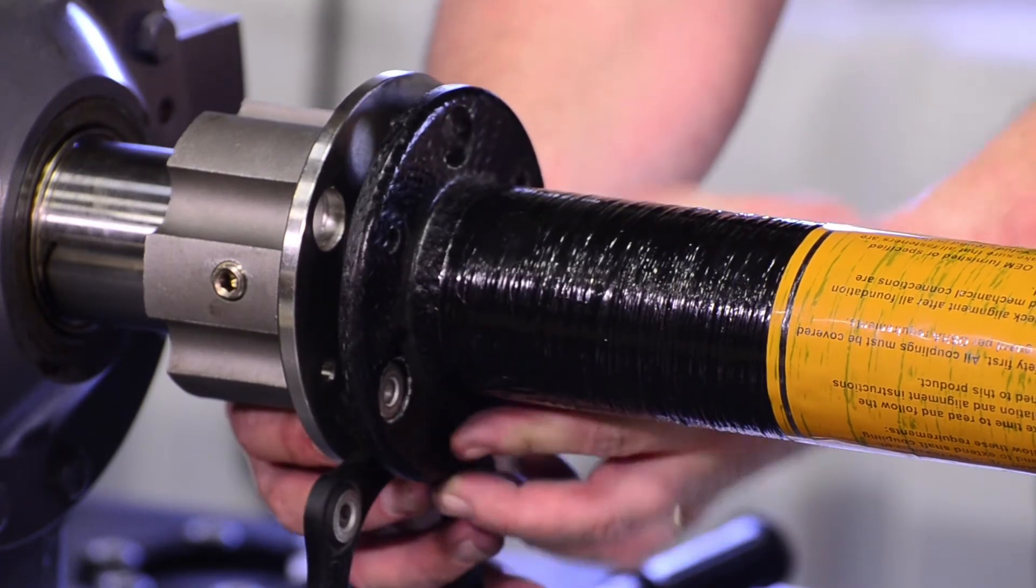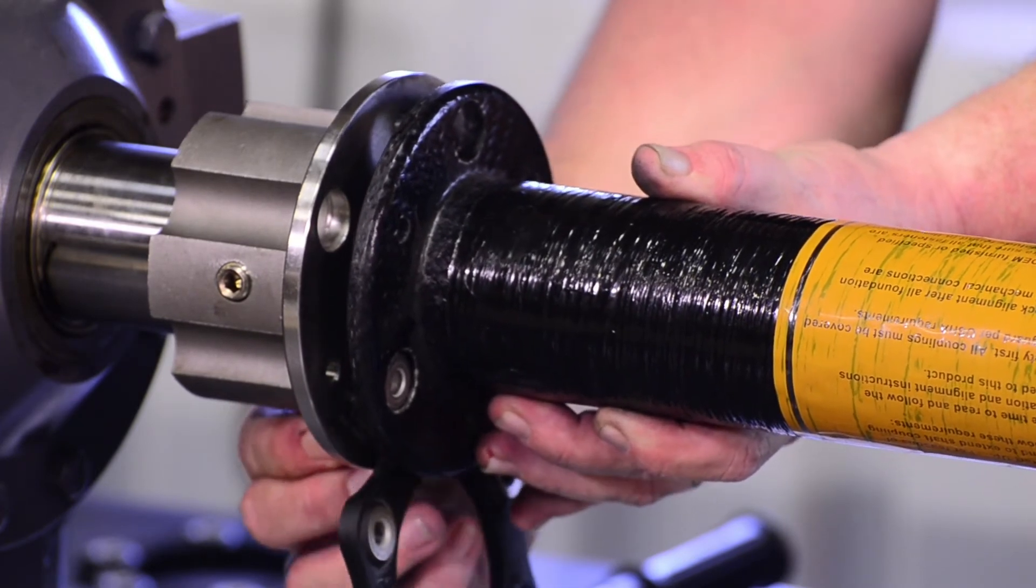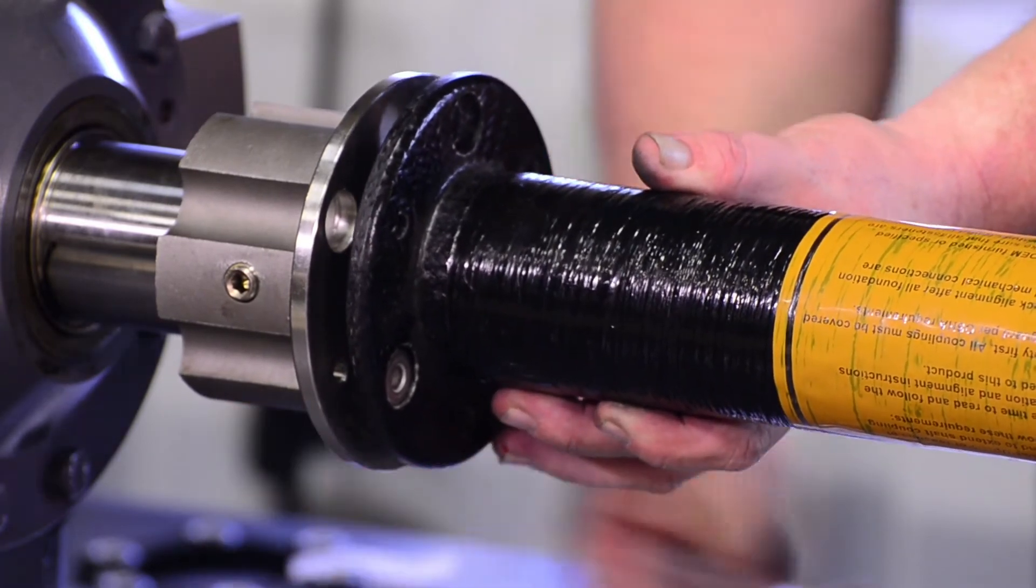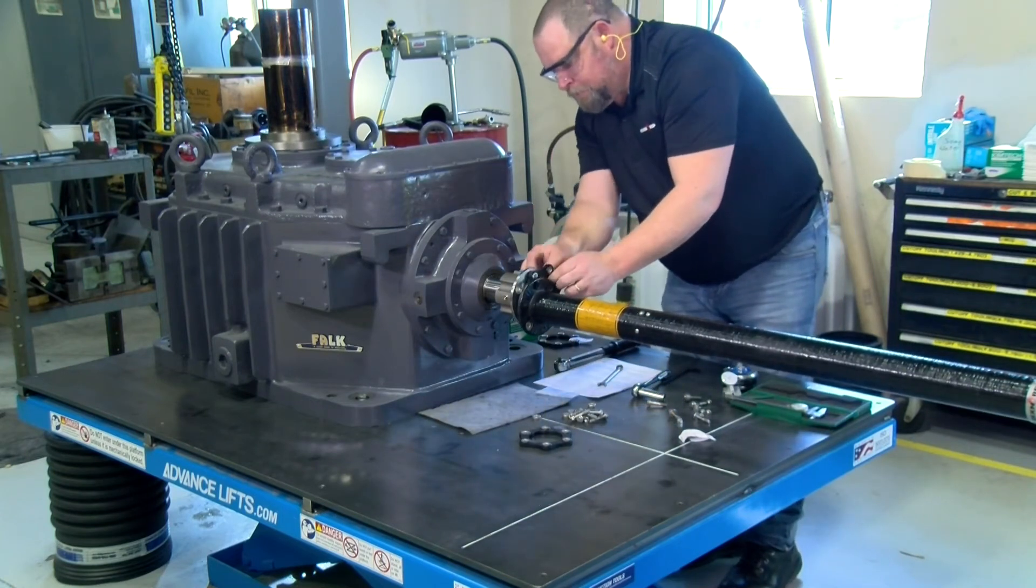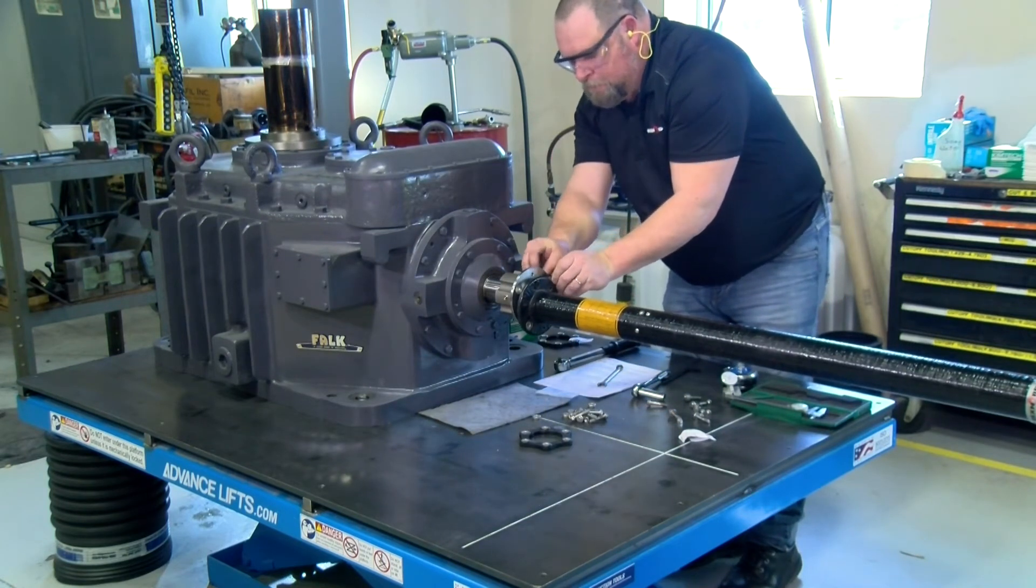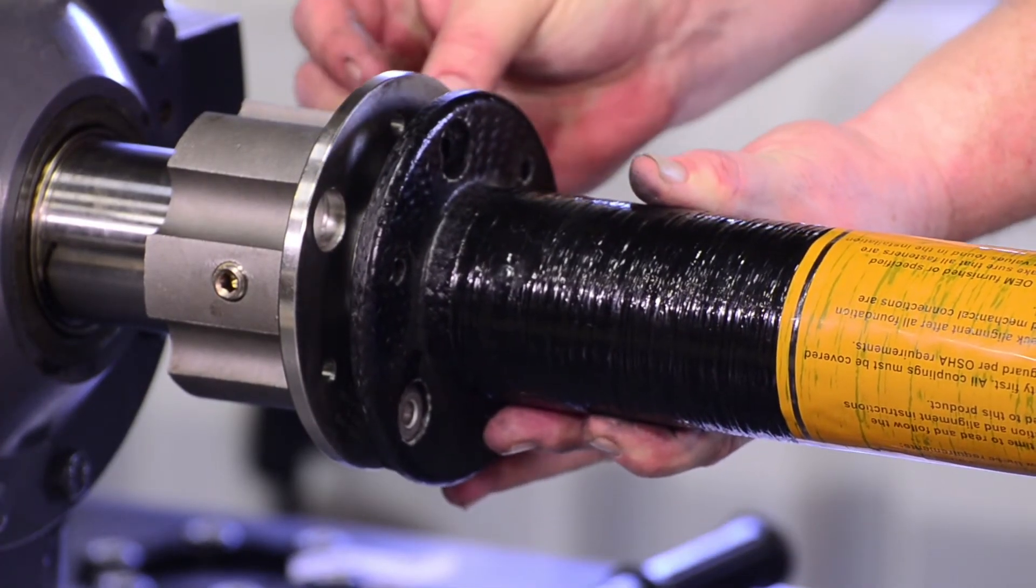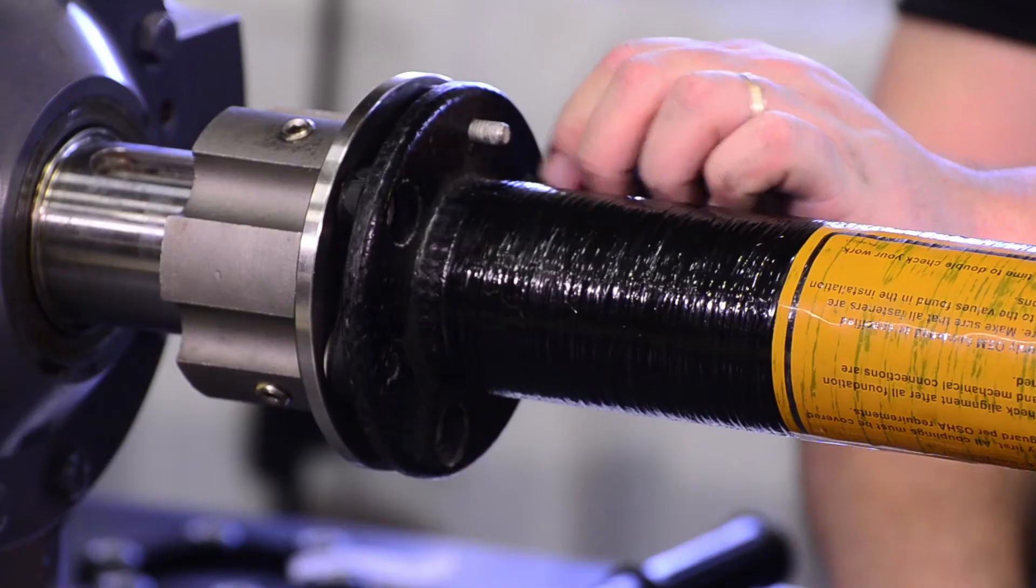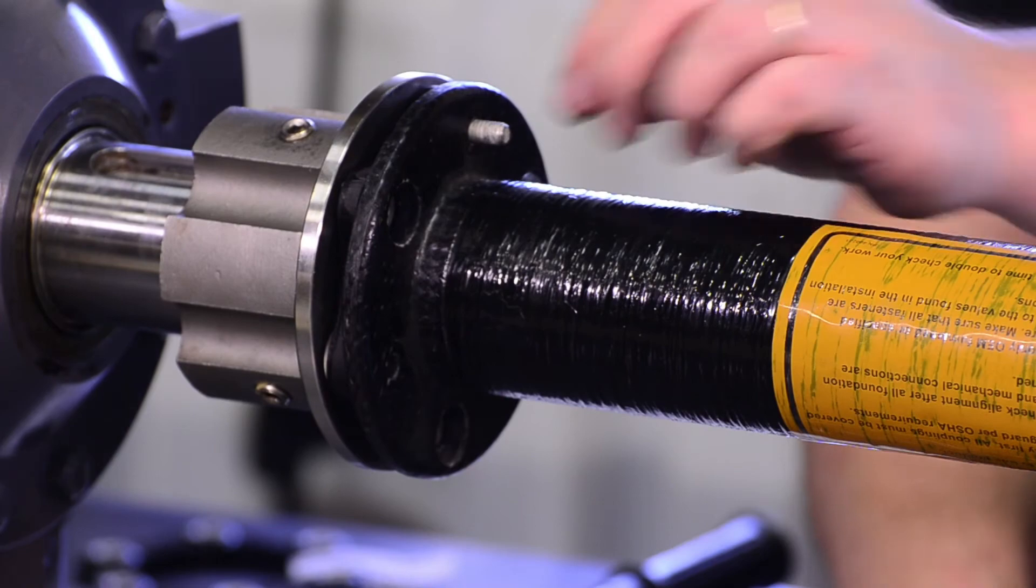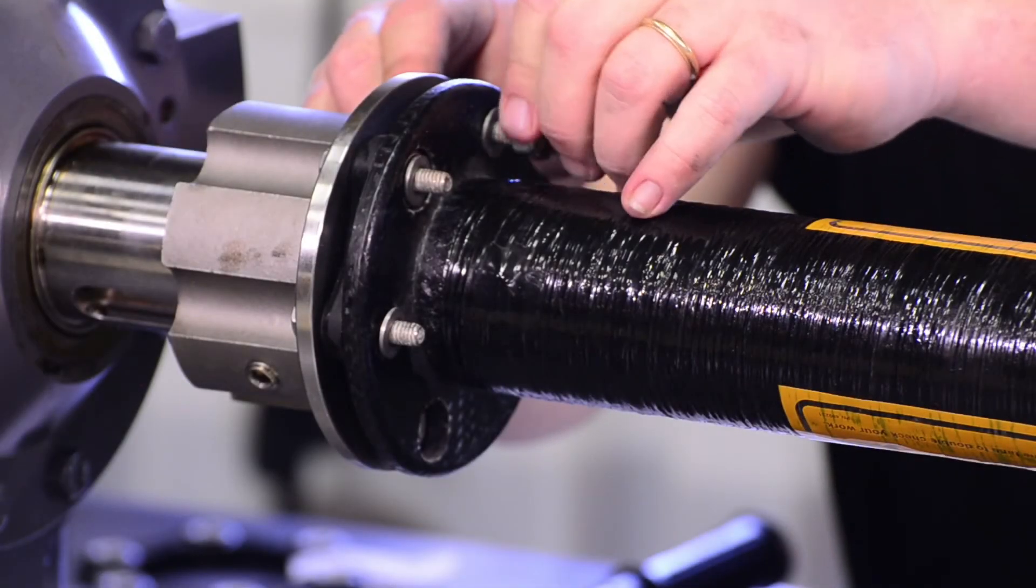Replace the flex element and hardware with new components. With the through holes of the new flex element aligned with the spacer and hub bolt holes, begin by inserting bolt and bushings through the large hole on the hub and through the spacer. On the other end, slide the washer over the bolt and loosely thread on the lock nut.